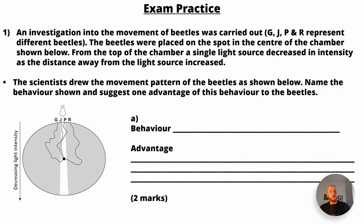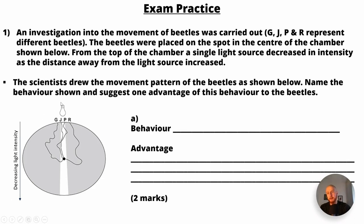Now let's do some exam practice. Question one: an investigation into the movement of beetles was carried out. G, J, P and R represent different beetles. The beetles were placed on the spot in the centre of the chamber. From the top of the chamber, a single light source decreased in intensity as the distance from the light source increased. The scientist drew the movement pattern of the beetles. Name the behaviour shown and suggest one advantage of this behaviour to the beetles. Pause the video and then we'll go through the answers.